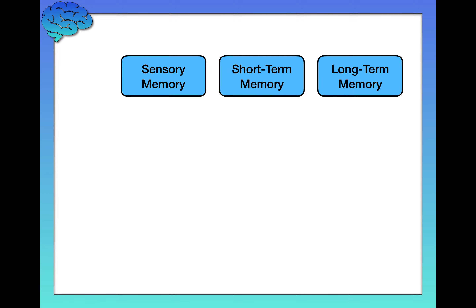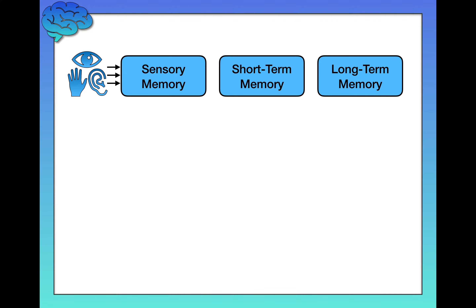First, I want to describe at a bird's eye level what the process looks like, because there's a sequence, a flow to your memory. It all starts by sensing or perceiving something from the outside world — touch, vision, hearing, smell, and so on. You take that information from the outside world into your brain, and that is going into your sensory memory.